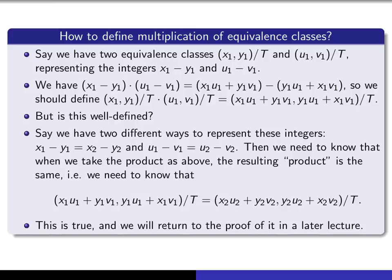We'll leave it at that for now. I just wanted to show you in this lecture how one can construct the integers from the set of natural numbers, and the device for doing that is this particular equivalence relation and its equivalence classes. Later on, we'll see that one can also show, using the appropriate equivalence relation, how to define the set of rational numbers from the set of integers.